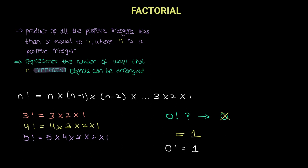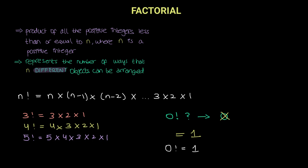So to conclude, a factorial represents the product of all the positive integers from n all the way down to one. It also represents the number of ways that n different objects can be rearranged. And zero factorial does not give you zero — in fact, zero factorial is equal to one, because there is only one way of arranging no objects.